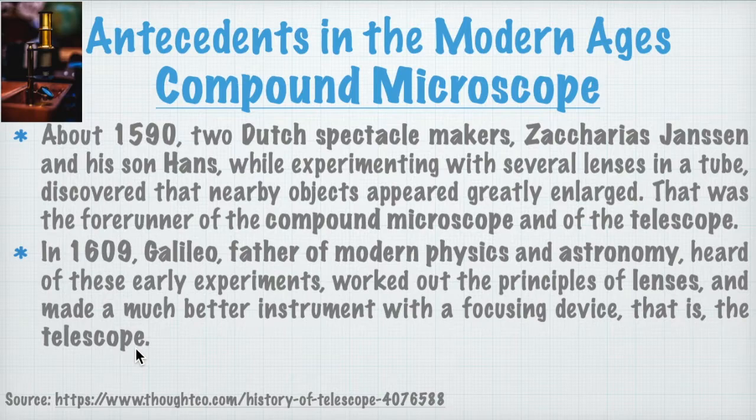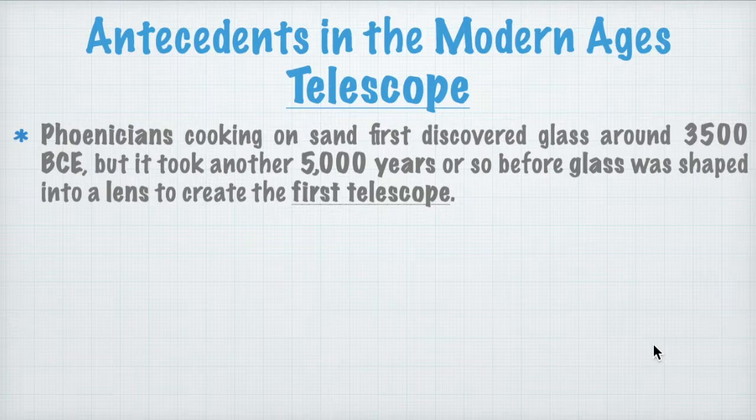We will be moving forward with what Galileo Galilei discovered. We're going to focus now on the telescope. Phoenicians cooking on sand discovered glass around 3500 BCE, but it took another 5,000 years or so before glass was shaped into lenses to create the first ever telescope.